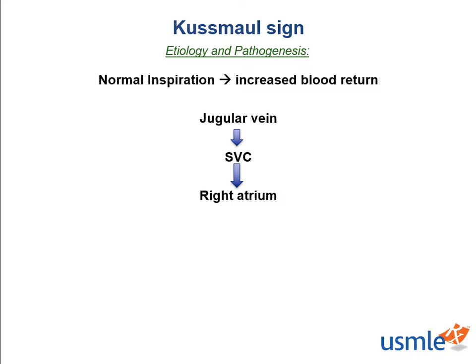Therefore, JVD should go down on inspiration, not up. So what would cause JVD to go up on inspiration? Well, anything that causes impaired filling of the right ventricle. And so the question for our patient became: why did he have impaired RV filling?